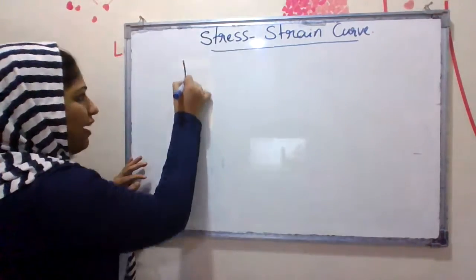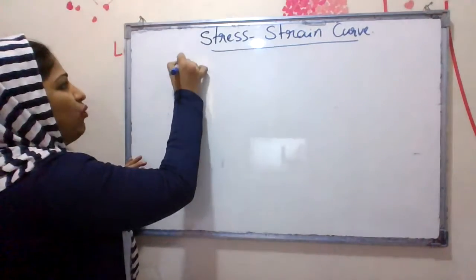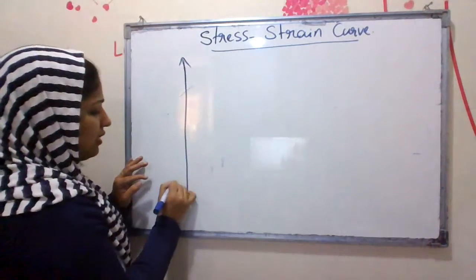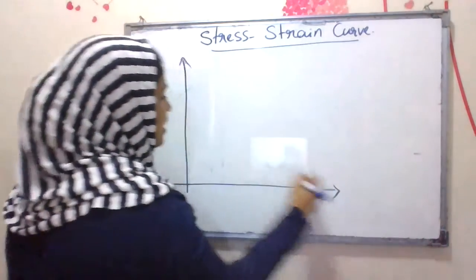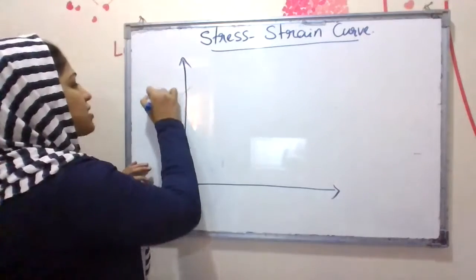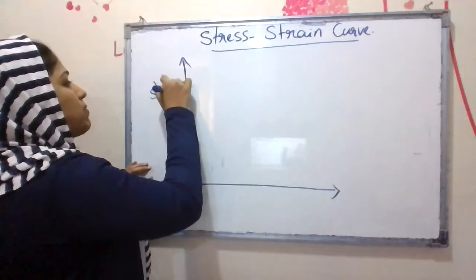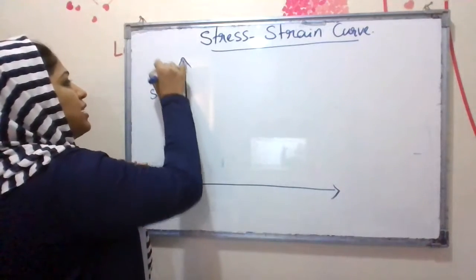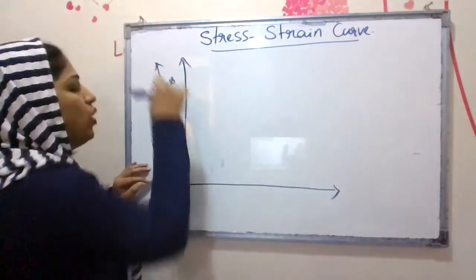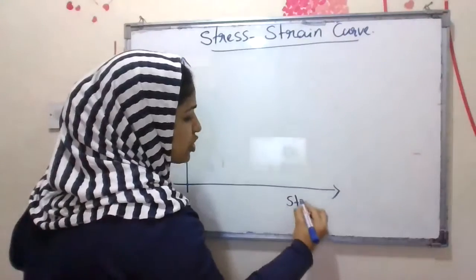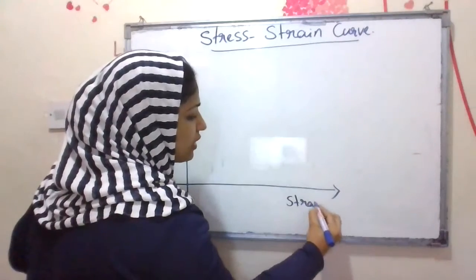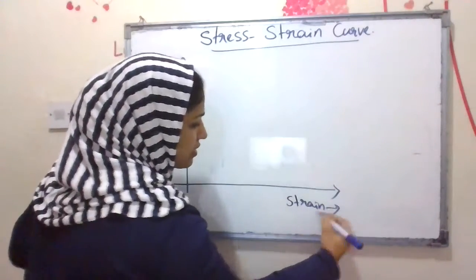For the graphical representation of the stress-strain curve, the Y-axis represents stress and the X-axis represents strain. Stress is taken along the Y-axis and strain is taken along the X-axis.